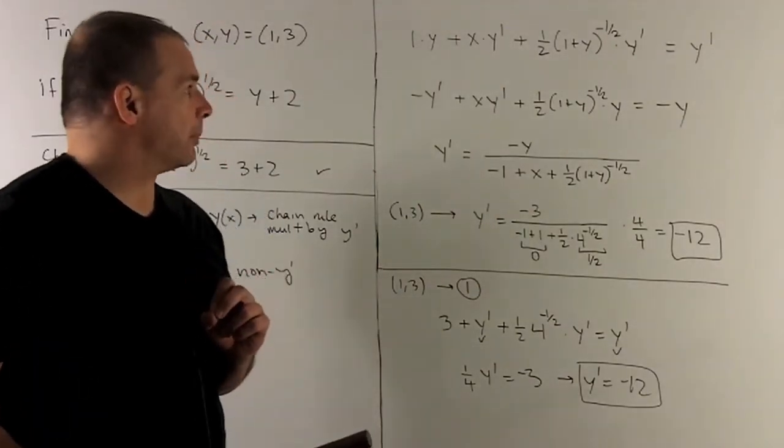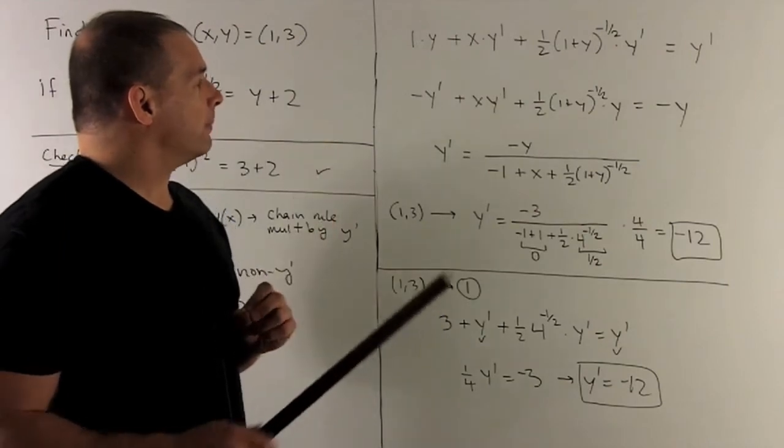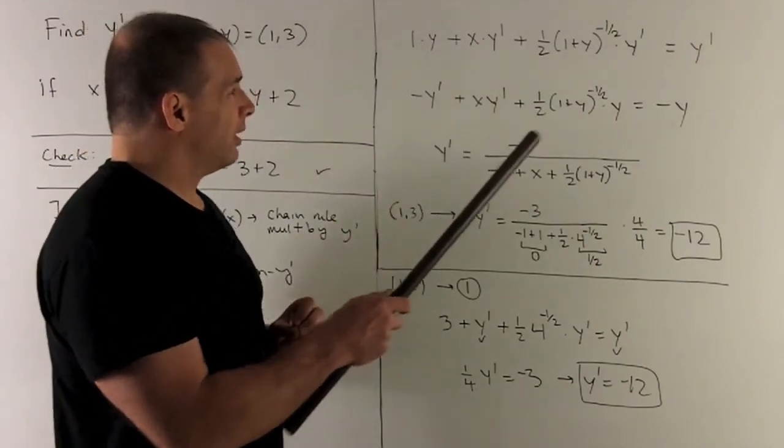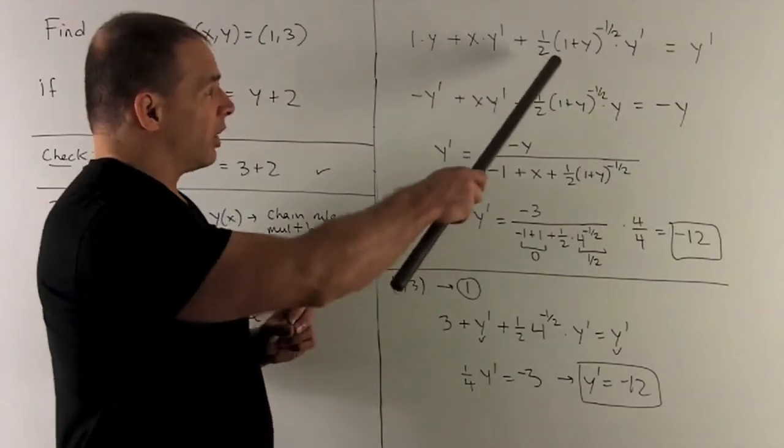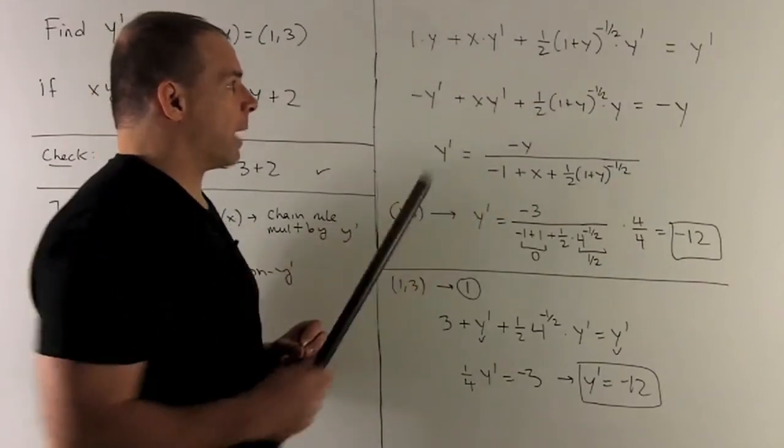When I do that, what happens? Y goes to three. We have a y prime. We have a y prime on the other side. And then here, by what I just did, we'll have a one fourth y prime.